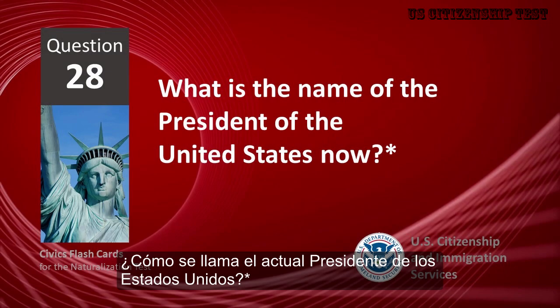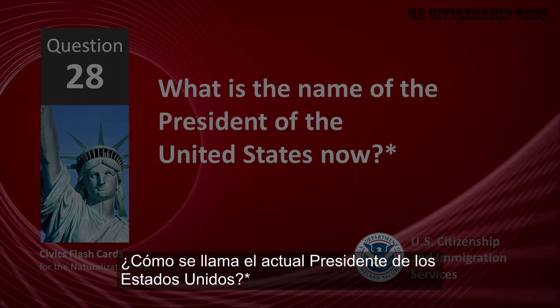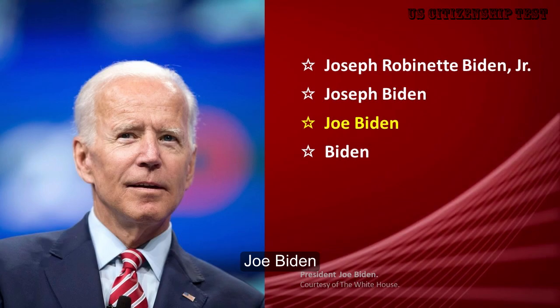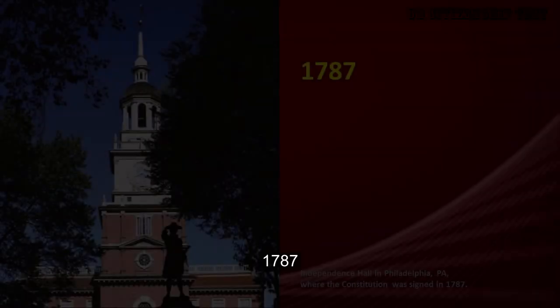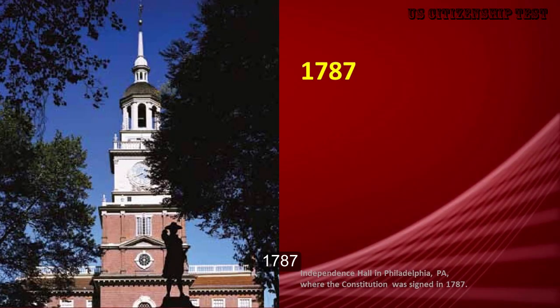What is the name of the President of the United States now? Joe Biden. When was the Constitution written? 1787.